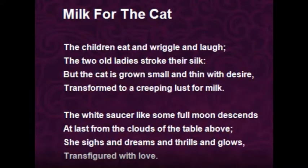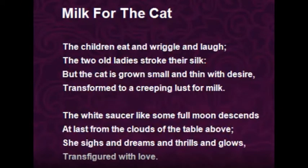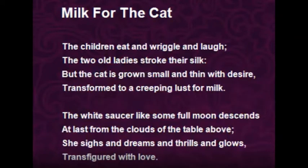The children eat and wriggle and laugh; the two ladies stroke their silk. But the cat has grown small and thin with desire, transformed to a creeping lust for milk. The poet explains that while the children eat, laugh and play among themselves and the two ladies adjust their silk robes, this neglect makes the cat's desire for milk grow stronger and stronger, so much so that her body is reduced to a small and thin mass burning with lust for food.